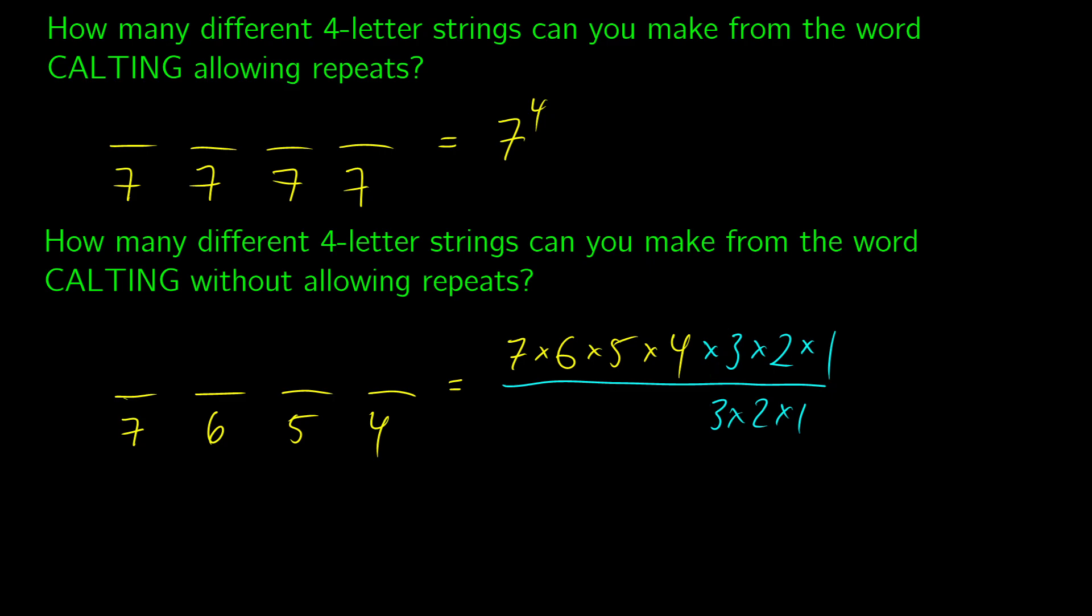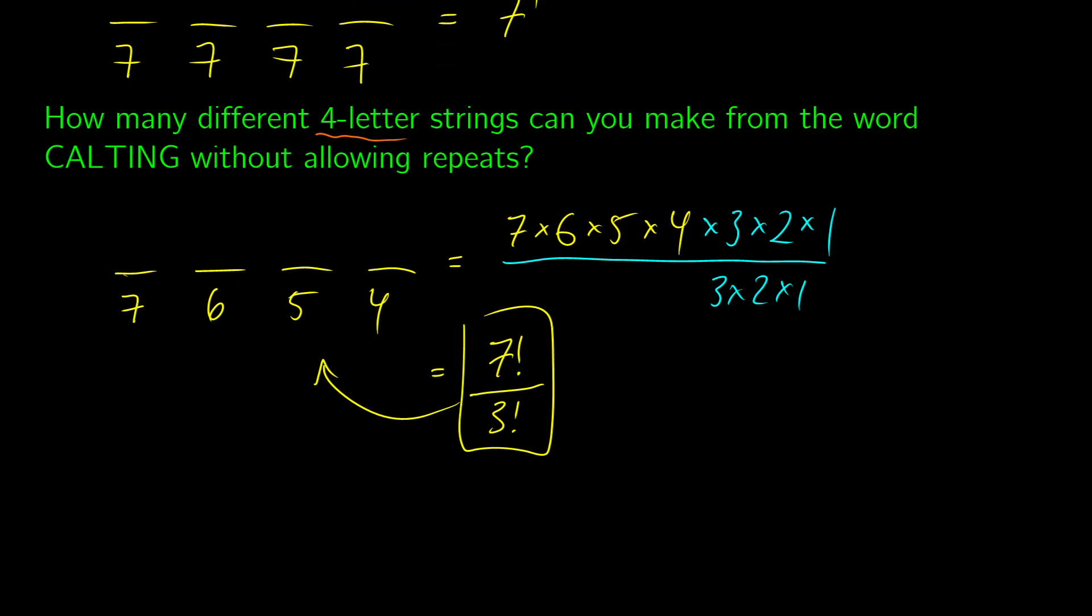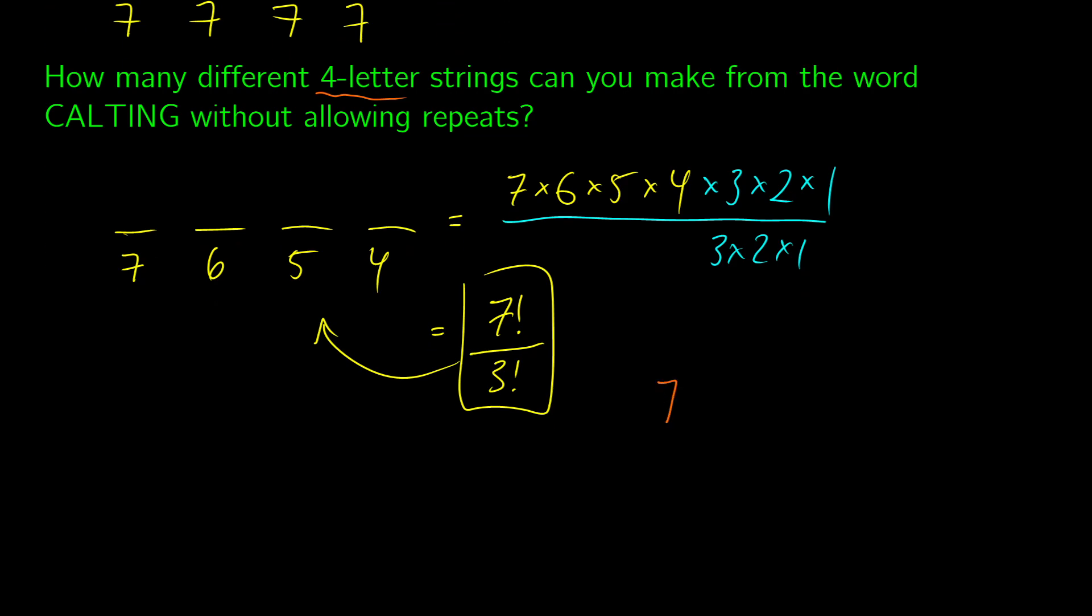Now, if we take a look at this, we have at the top is seven factorial, and we're dividing by three factorial. And that's giving us the number of solutions to this problem where we don't have repeats. Now, what I asked for was how many different four-letter strings. So we can think of this factorial at the top as being the total. And what we're dividing by is seven minus four factorial, where this is going to be the number of letters.